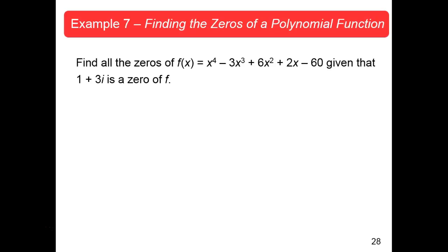Notice the coefficients: one, negative three, six, two, and negative sixty. Not only are those all integral coefficients, but because they're all integers, they're all real numbers. Anytime you have a polynomial function and all the coefficients are real, with no complex imaginary parts to them, then you know that if you have a complex zero, those complex zeros are always going to show up as conjugate pairs.